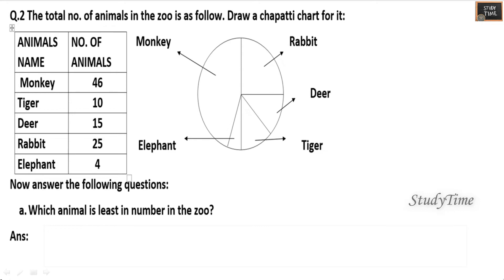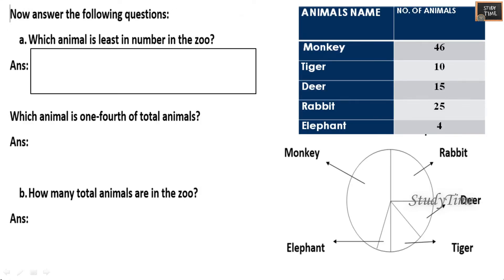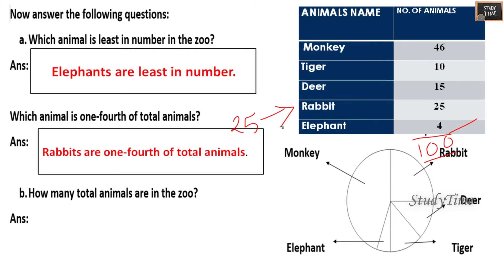Second question: the total number of animals in the zoo is as follows. Draw a pie chart for it. Animals' names are given. First question: which animal is least in number in the zoo? So here least number is elephant. Which animal is one fourth of total animals? Total animals here is 100. One fourth of 100 is 25. 25 represents rabbit, so rabbit is the animal which is one fourth of total animals. How many total animals are in the zoo? It is 100.